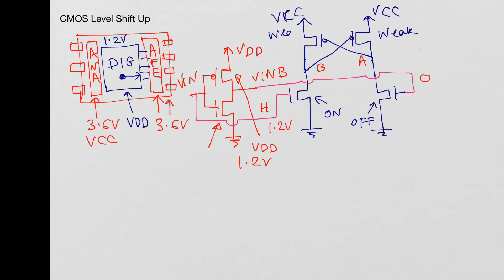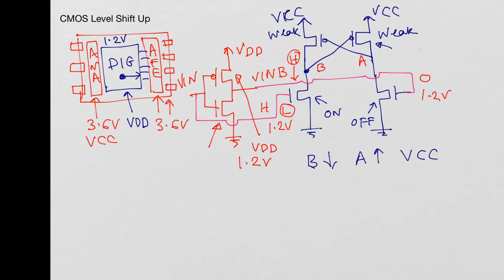Both P-channel devices are weak, so whichever N-channel device is on will pull down that node. Node B is pulled down, which means the gate of the corresponding P-channel is at ground, so node A is pulled up all the way to VCC. In the other case, where VIN is low and VIN bar is high at 1.2 volts, node A is pulled down and the gate of that P-channel is at ground, so node B is pulled up all the way to VCC.